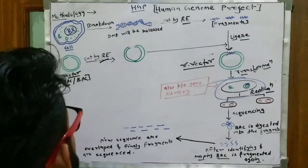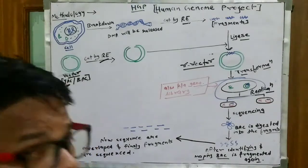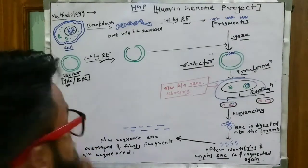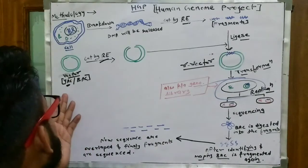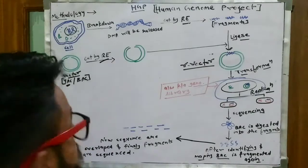Now we will take a cell and a vector. Remember it, we will take a yeast artificial chromosome and bacterial artificial chromosome vector. We have to take a yeast artificial chromosome and bacterial artificial chromosome vector.